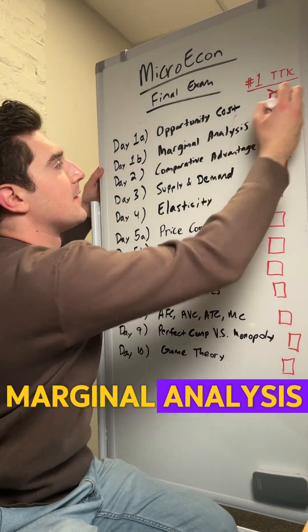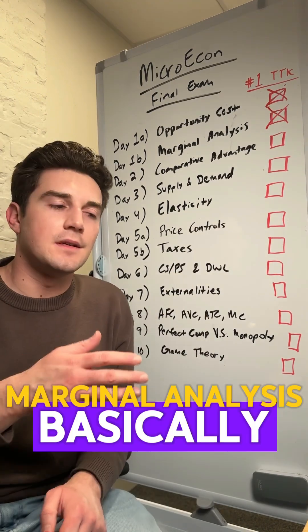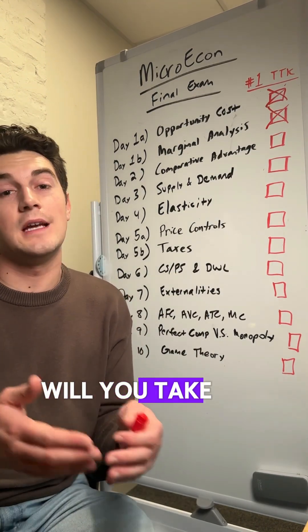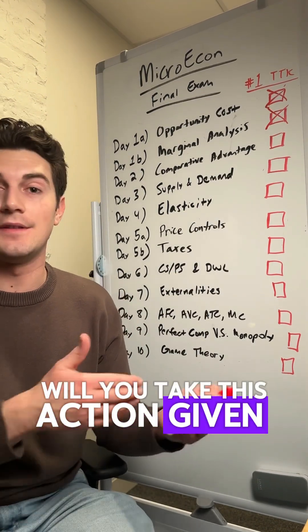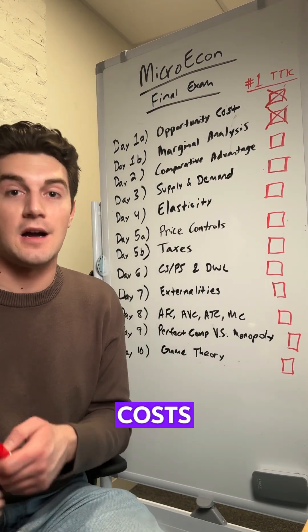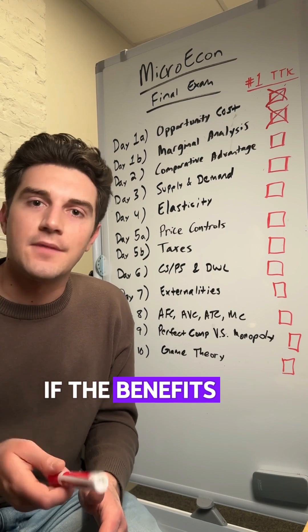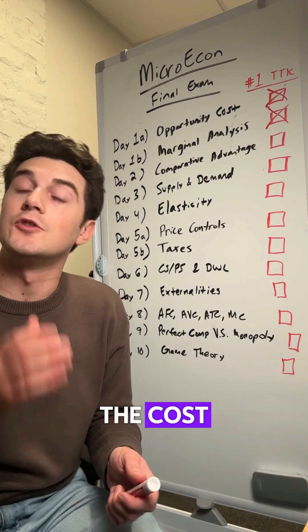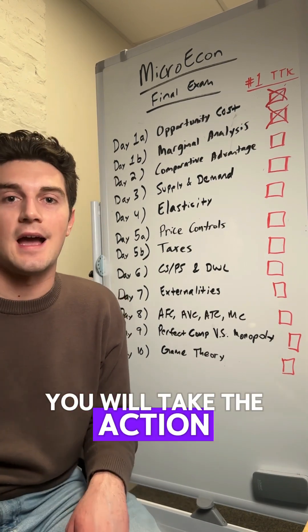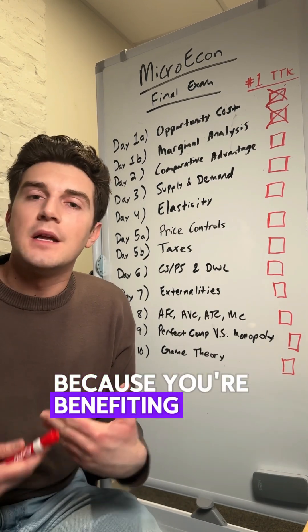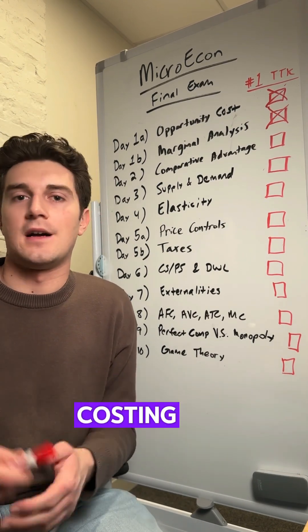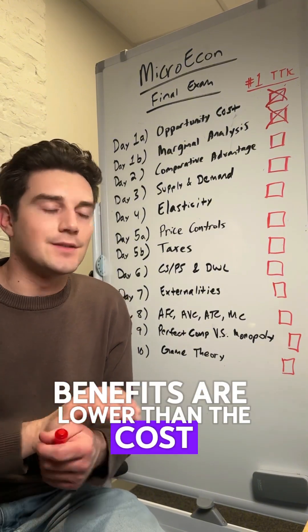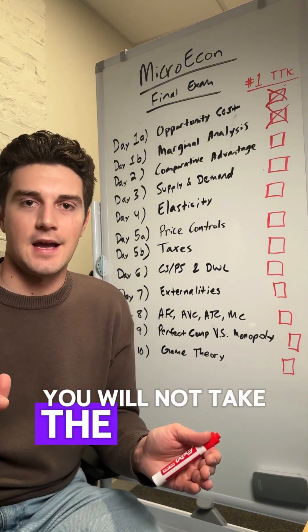Marginal analysis. Basically, you often will get asked will you take this action given these benefits and costs? If the benefits are higher than or equal to the cost, you will take the action because you're benefiting more than it's costing you. If the benefits are lower than the cost, you will not take the action.